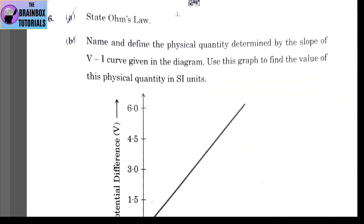Question 36, Part A: state Ohm's law. Voltage across a conductor is directly proportional to the current flowing through it, provided other physical conditions and temperature remain the same. The formula is V = IR.